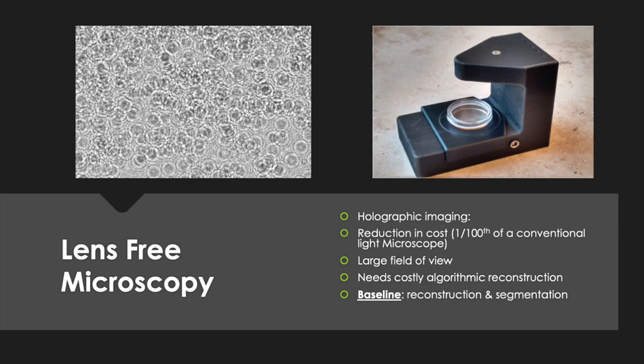An image sensor below the probe captures the light. The challenge of the method is that we cannot obtain interpretable images right away. You can see a cropped example of the raw data, also called holograms, we acquired on the left side of the slide. Especially with overlapping cells, these images somewhat resemble random noise. However, it is possible to reconstruct the images algorithmically.